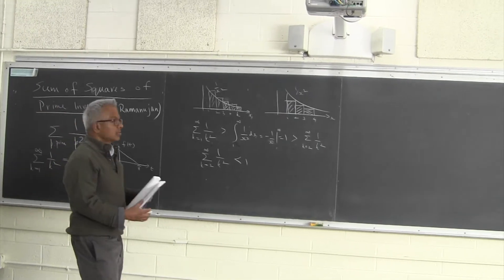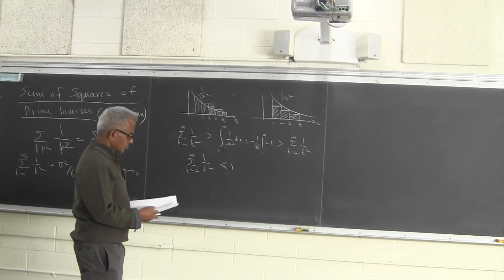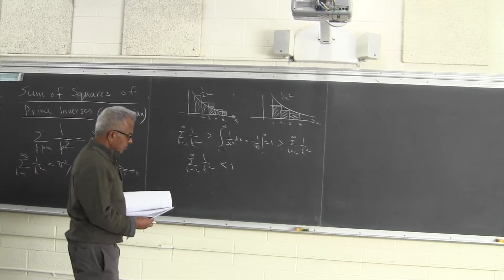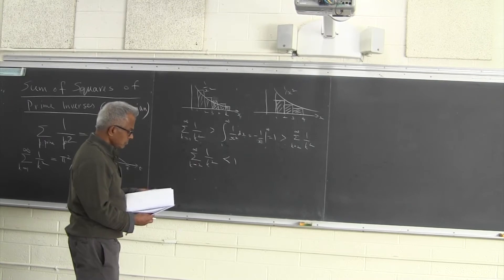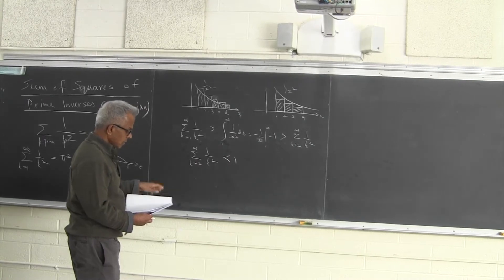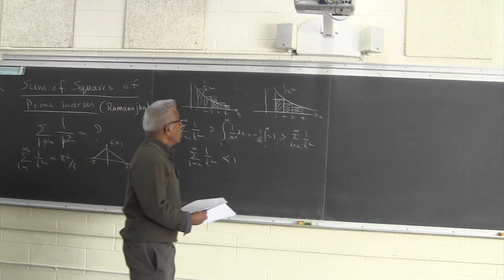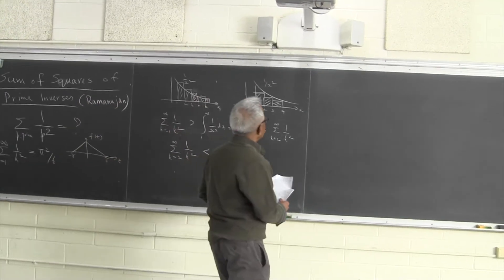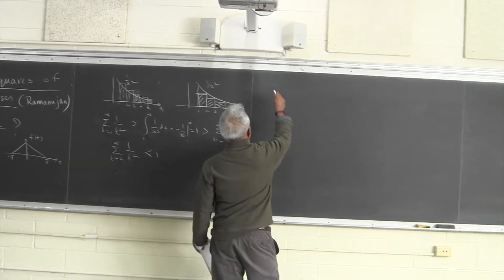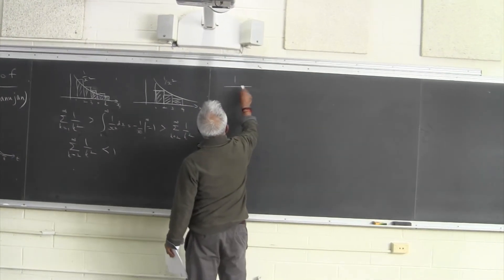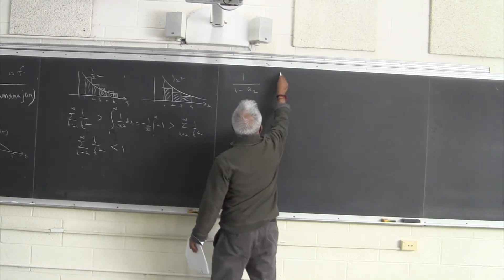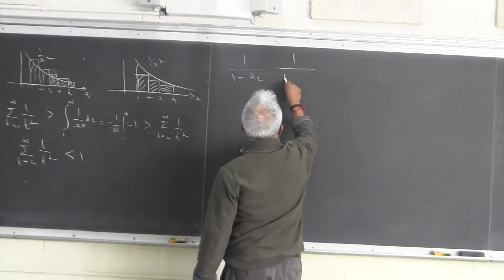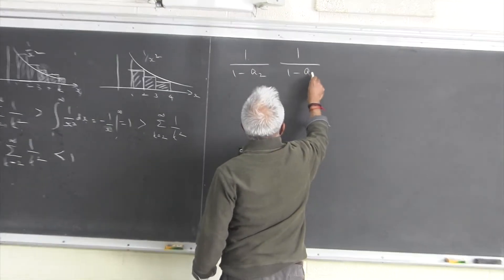Let me show a method due to Ramanujan. He starts with these identities — this is a clever observation.